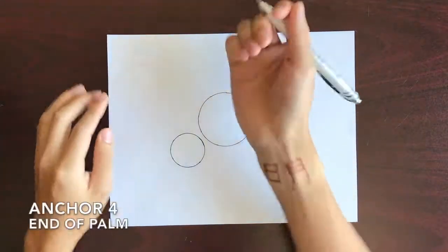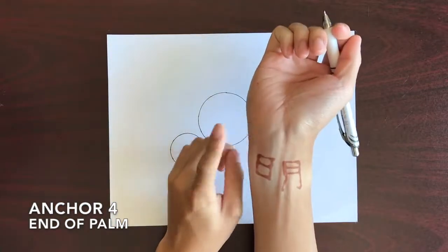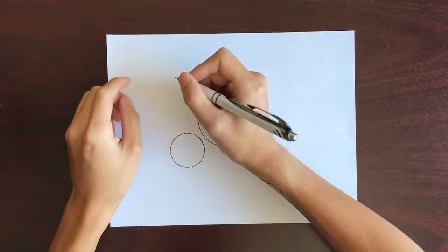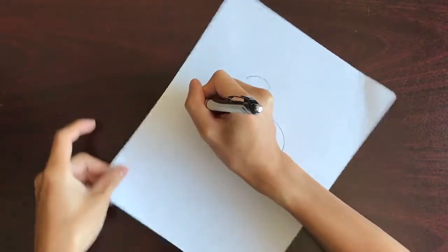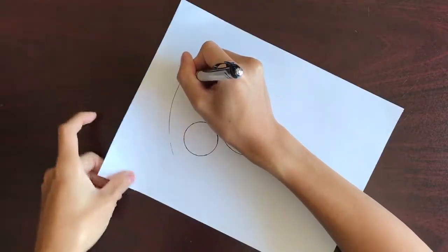If we use the end of our palm as the anchor point, we can draw a very large circle. This one even came off the paper.